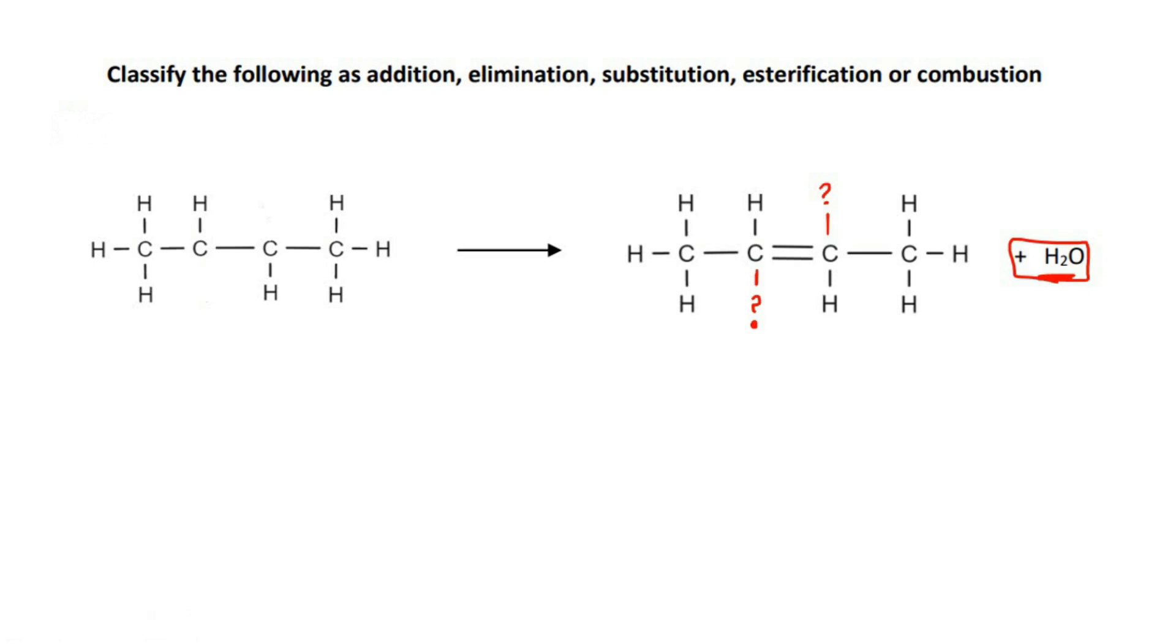you now have only three bonds over here and only three bonds over there. So the way that you would fix that is by putting a double bond. And that's what we can see happening over there.